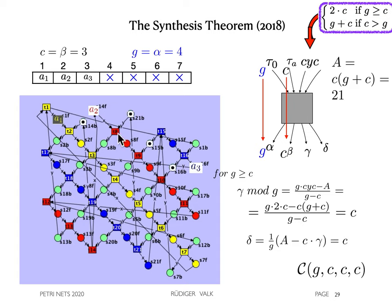The following animation shows our example cycloid by a colored net with three interacting processes in blue, red and yellow. Here, the three cars are represented by colored tokens.